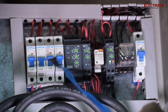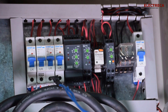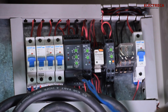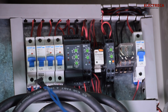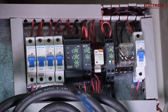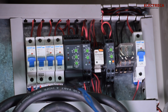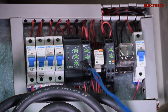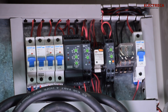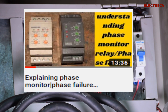These three breakers out of the four are connected to protect the individual lines of the phase monitor, and the fourth one controls the entire control circuit. If you wanted to test this panel, you would switch off one breaker and see what happens with the phase failure. We did that in a previous video which I've linked.